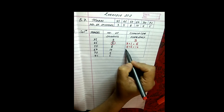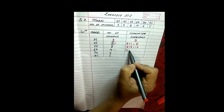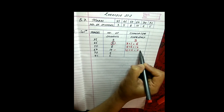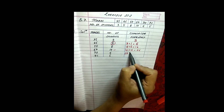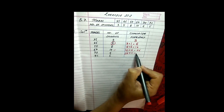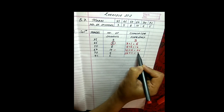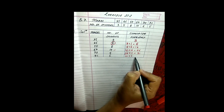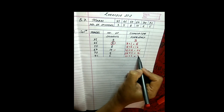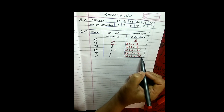Now this 16 will be added to 10, then we got 26. 26 is added to 5, we have 31, and finally 31 is added to 5, we will get 36. So this is the cumulative frequency.